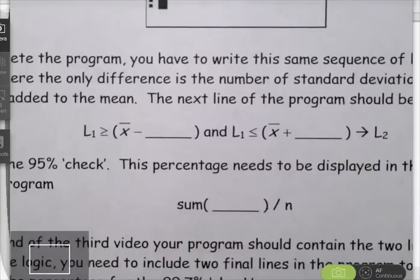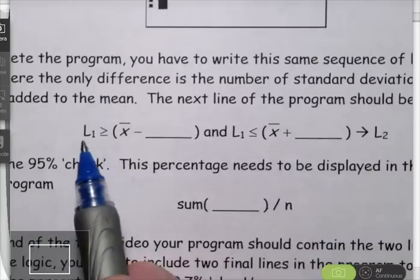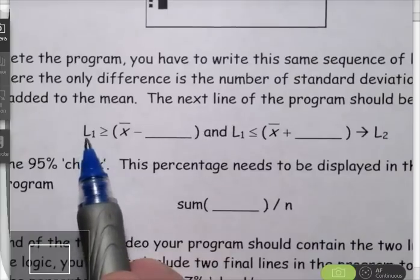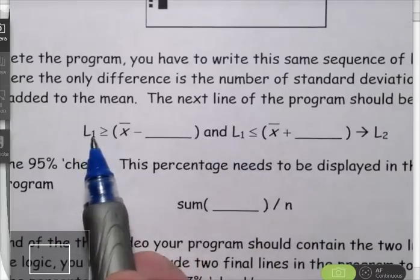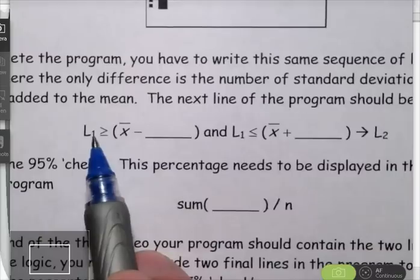Next into your calculator, we need to get the logic to check the 95% portion of the 68-95-99.7 rule. But to do that, all we have to do is compare the observations in list one and see how many of them are within two standard deviations of the mean.